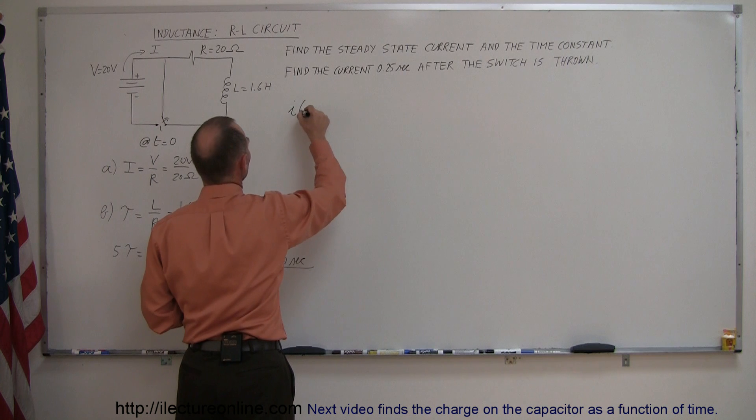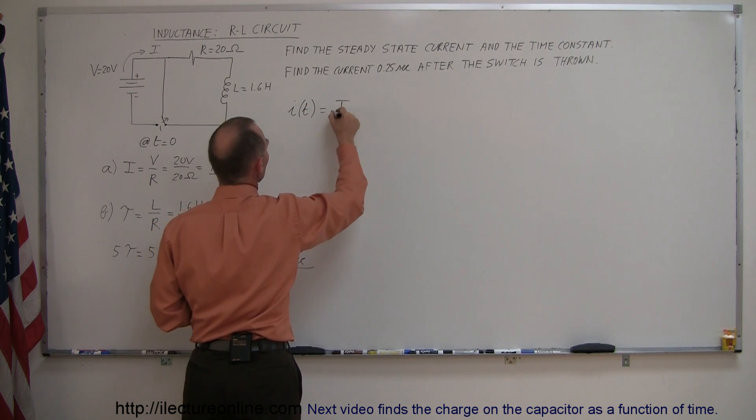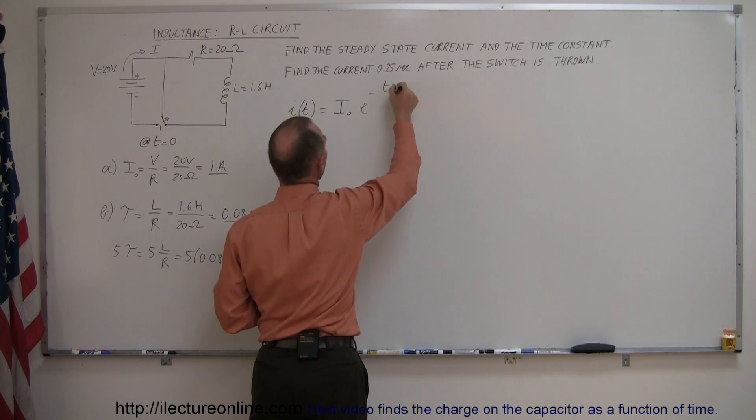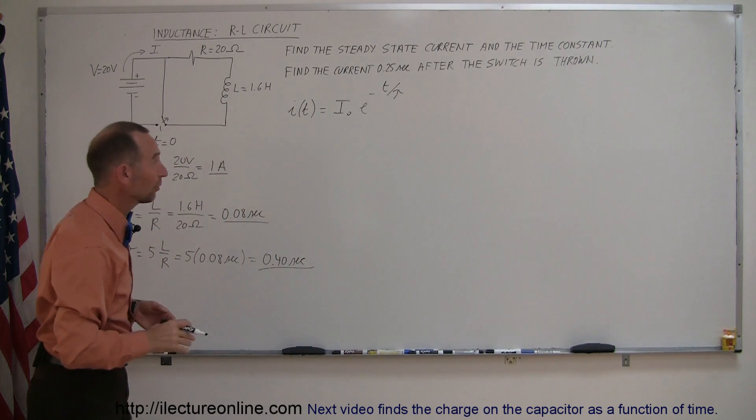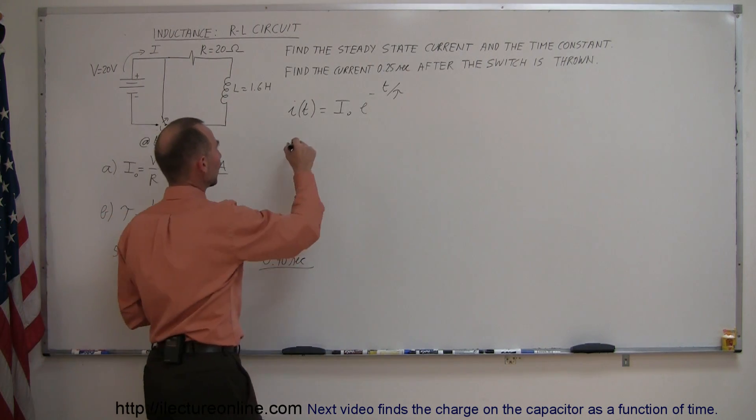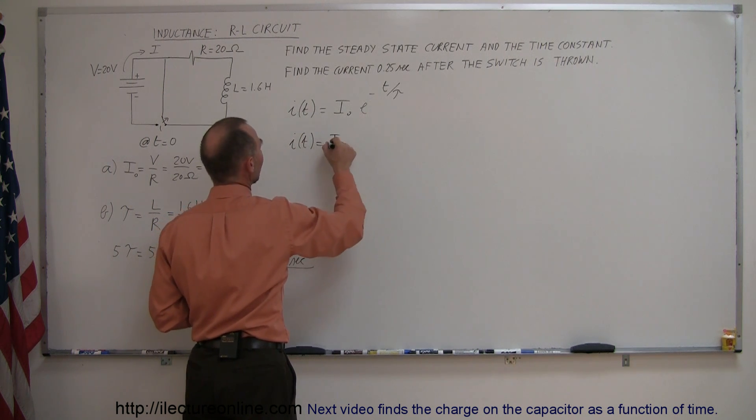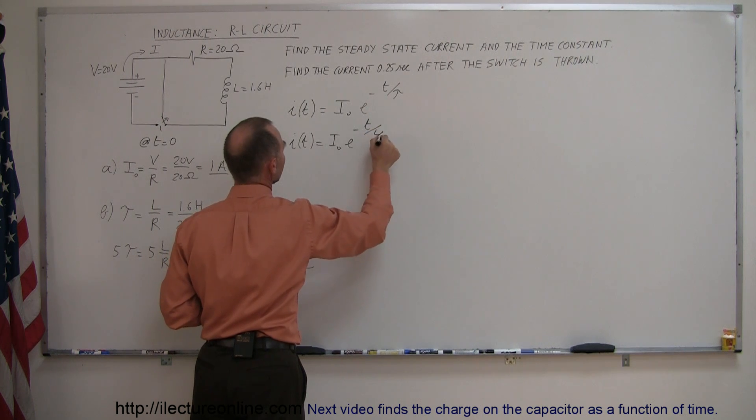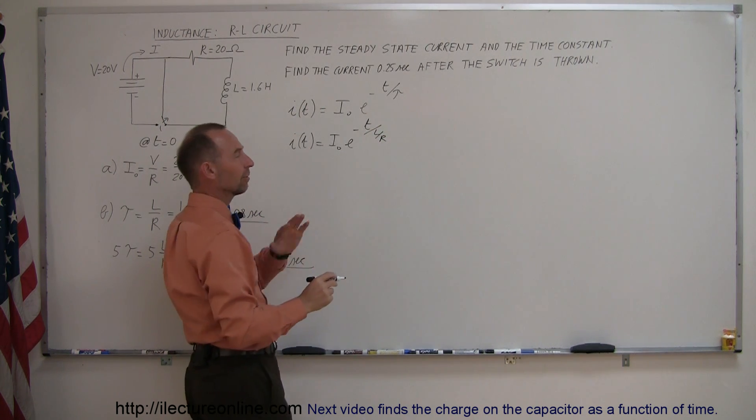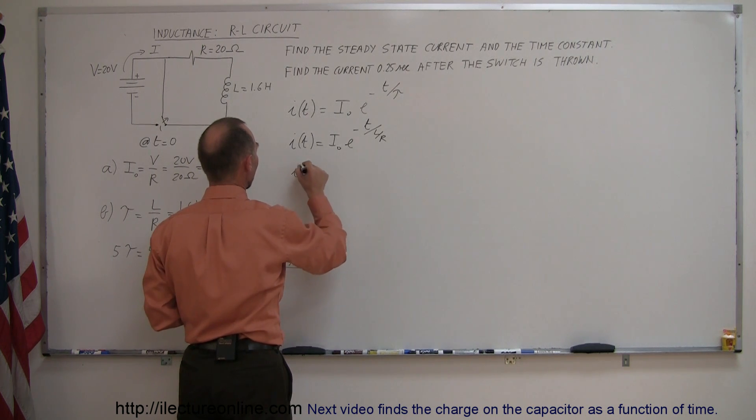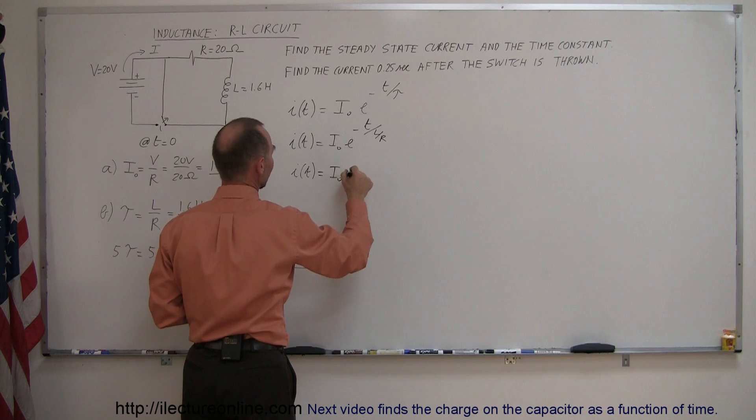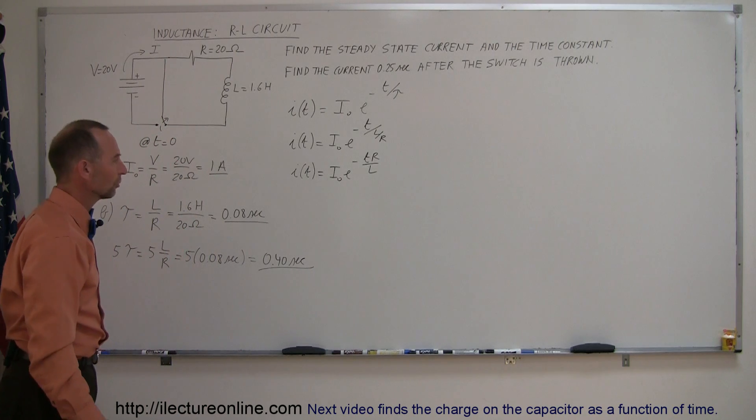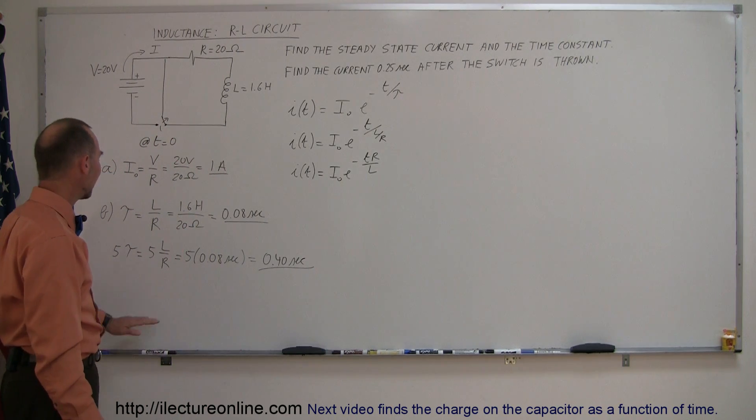The equation is that i as a function of time is equal to the i initial times e to the minus t over tau, where tau is the time constant of the circuit which is L over R. So this can be written i as a function of time is equal to i sub not times e to the minus t over L over R. If you divide by fractions and multiply by its inverse you can say i is a function of time is equal to i sub not times e to the minus tR over L.